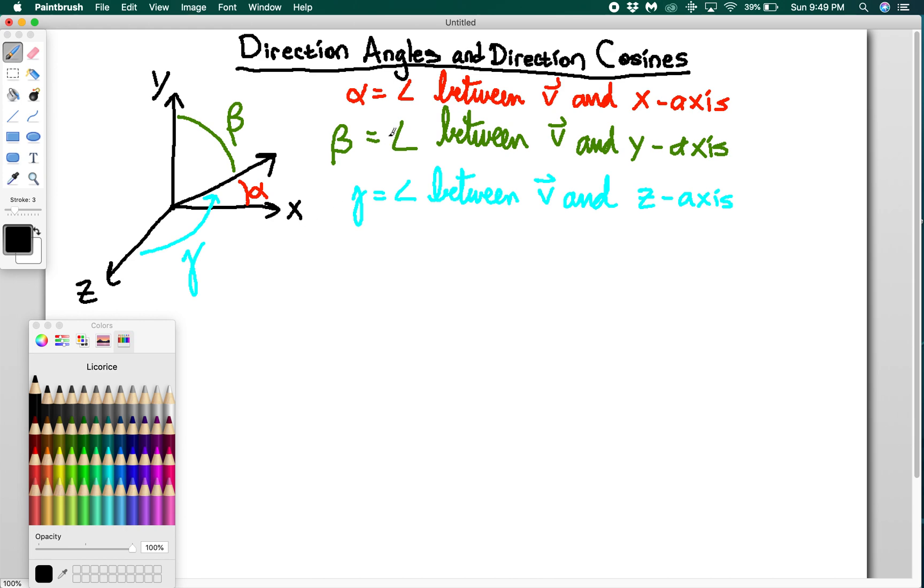So to figure out what these angles are, the easiest way is to say, well, if I have a vector v, the angle between this vector and the x-axis is simply the angle between this vector and the unit vector that points along the x direction, i hat. So if I want to find what alpha is, I'm going to do v dot i hat, and that's going to be equal to the magnitude of vector v times the magnitude of i hat times the cosine of the angle between them, which is our direction angle alpha.